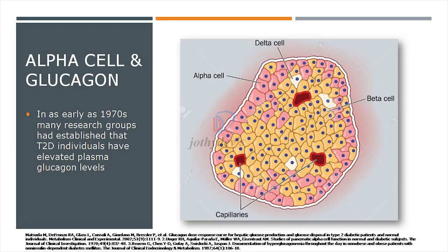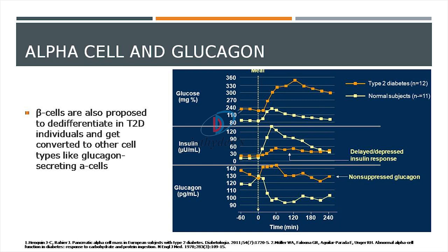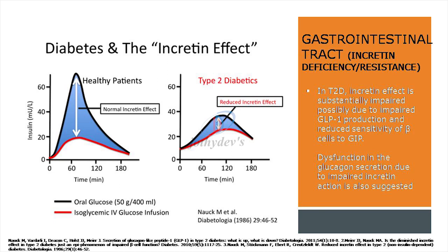As early as the 1970s, multiple groups established that type 2 diabetes individuals have elevated glucagon levels. Beta cells are supposed to de-differentiate, and during this process some convert to alpha cells secreting glucagon. So even as insulin levels progressively decline in type 2 diabetes, glucagon levels tend to remain elevated. This non-suppressed postprandial glucagon in type 2 diabetes contrasts with appropriate suppression seen in healthy individuals.